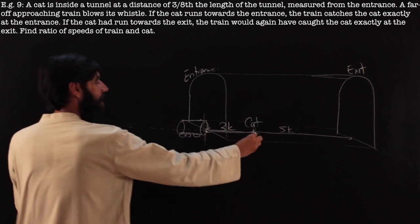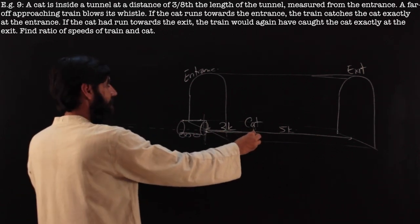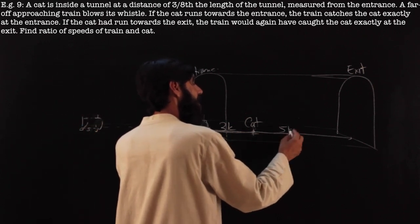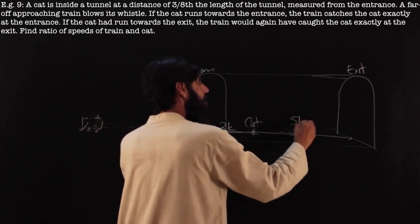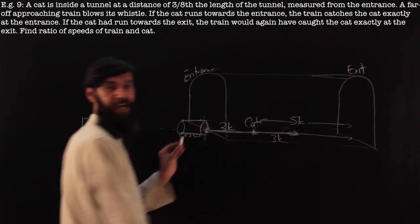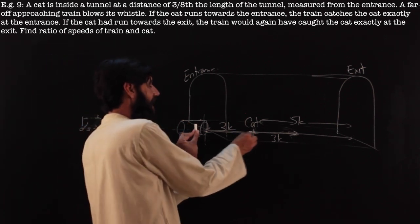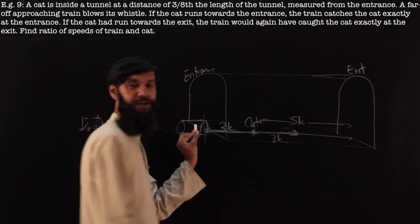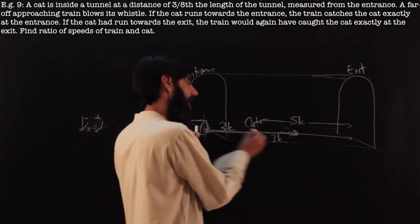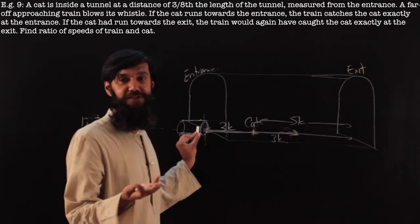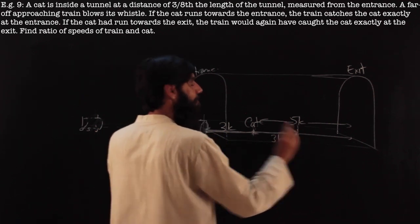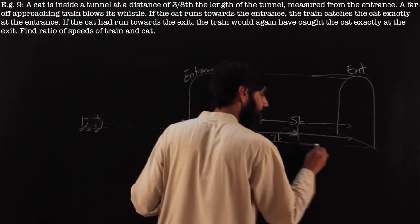Now if the cat had travelled in the other direction — in the same time the train reaches the entrance — the cat would have covered only 3K in that direction as well. What I am saying is: in the time the train reaches the entrance, whether the cat runs towards the left or towards the right, it is going to cover the same distance. Why? Because the time is the same and it is the same cat, so direction is not going to change the distance covered. So the cat covers 3K either way, placing it at 3K from the entrance when the train arrives.